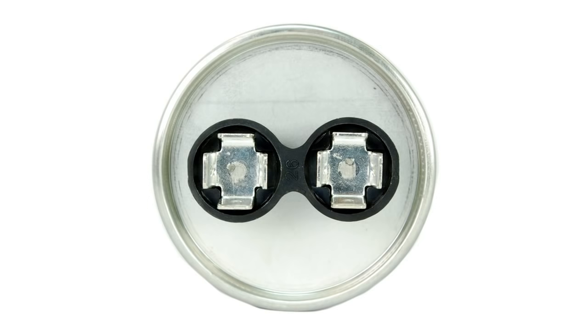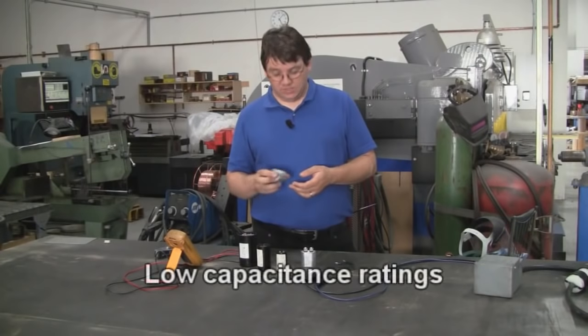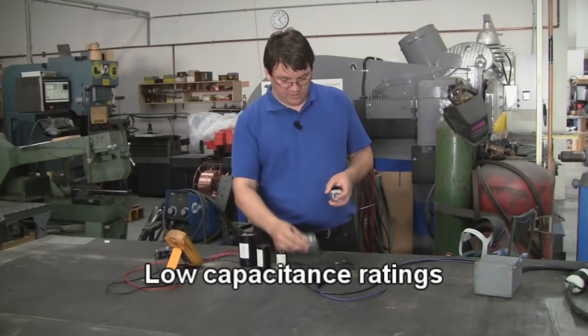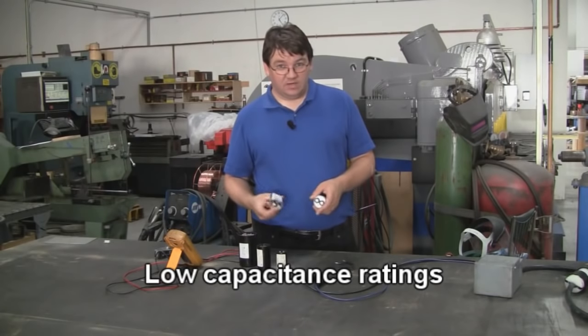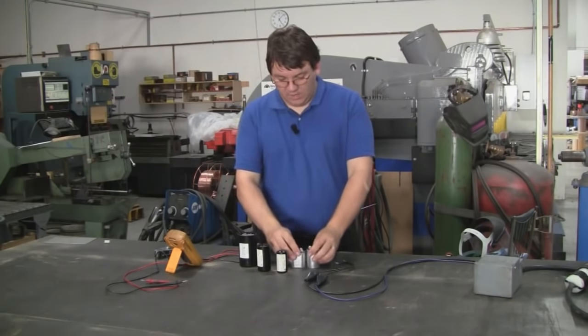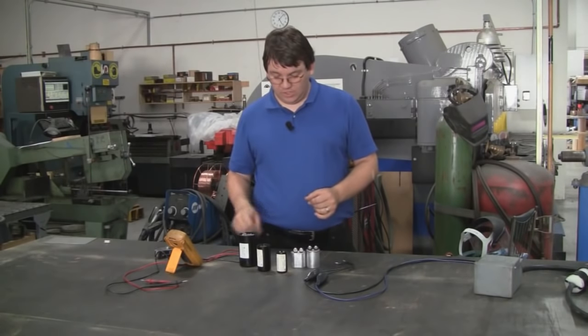They're oil cooled, they're generally in a metal case, they're filled with oil. They tend to be fairly low capacitance ratings. So an example here I've got 15 microfarads, this one here is 5 microfarads. They're fairly small capacitance values and that's all that's really necessary often for the run operation on a motor.